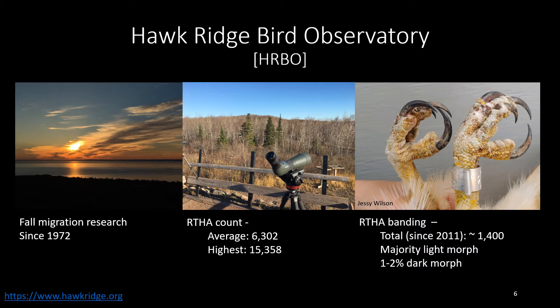One of the best hubs for fall red-tailed migration in Minnesota is Hawk Ridge Bird Observatory, located along the shore of Lake Superior in Duluth. Official counting and banding efforts have taken place here for almost 50 years, amounting in a wealthy dataset and innumerable number of birds seen and captured. On average, 6,302 red-tailed hawks are counted every fall, the highest count for one season being 15,358. In total, about 1,400 red-tails have been banded since 2011. The majority of these birds are light morphs, with about one to two percent being dark morphs. The subspecies of light morphs caught include Borealis and B.J. Abieticola, which I will talk more about later. On rare occasion, other subspecies such as Harlan's and Krider's red-tailed hawks have been observed and caught. It's important to note that light morph Chloris birds have never been observed by the researchers at Hawk Ridge.